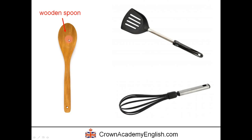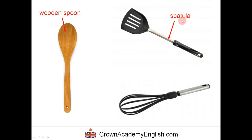This is called a wooden spoon. This is a spatula — a spatula is a flat object. We use it, for example, if we're cooking fried eggs in the frying pan and we want to remove the eggs, then we use a spatula. And this is called a whisk. We use a whisk to beat eggs — we turn the whisk very quickly in a liquid, and it adds air and oxygen to the liquid.